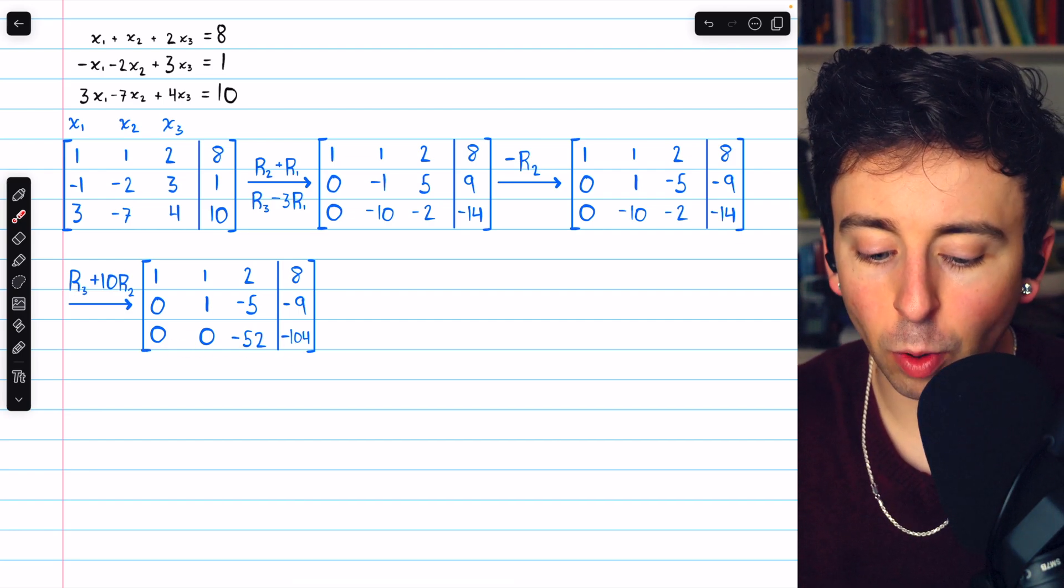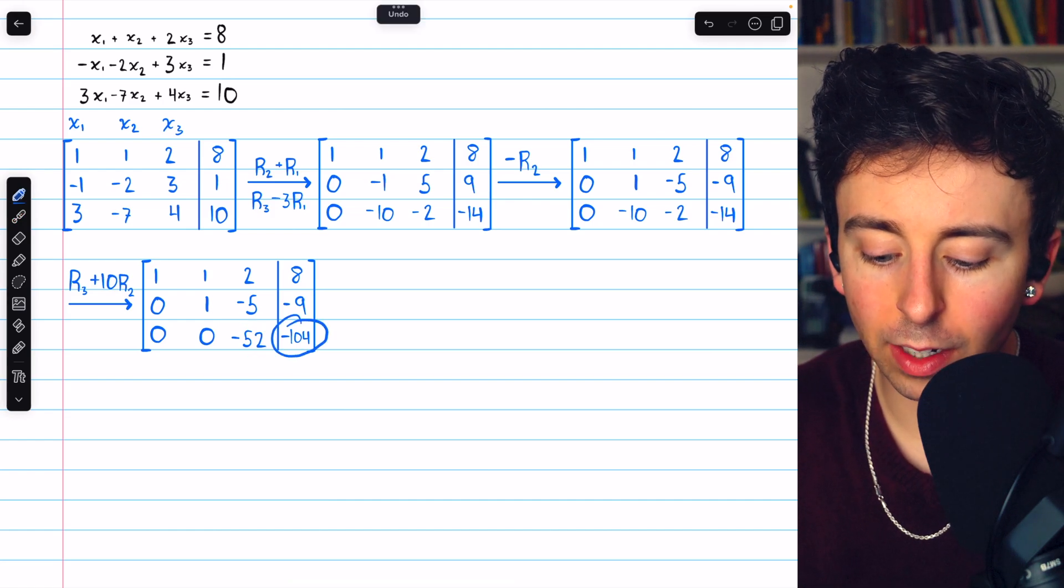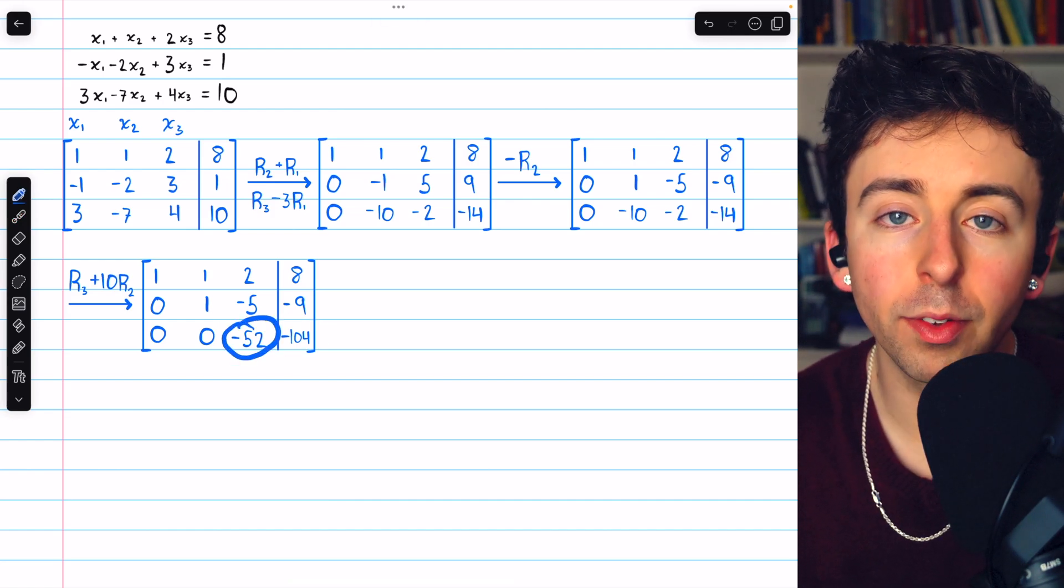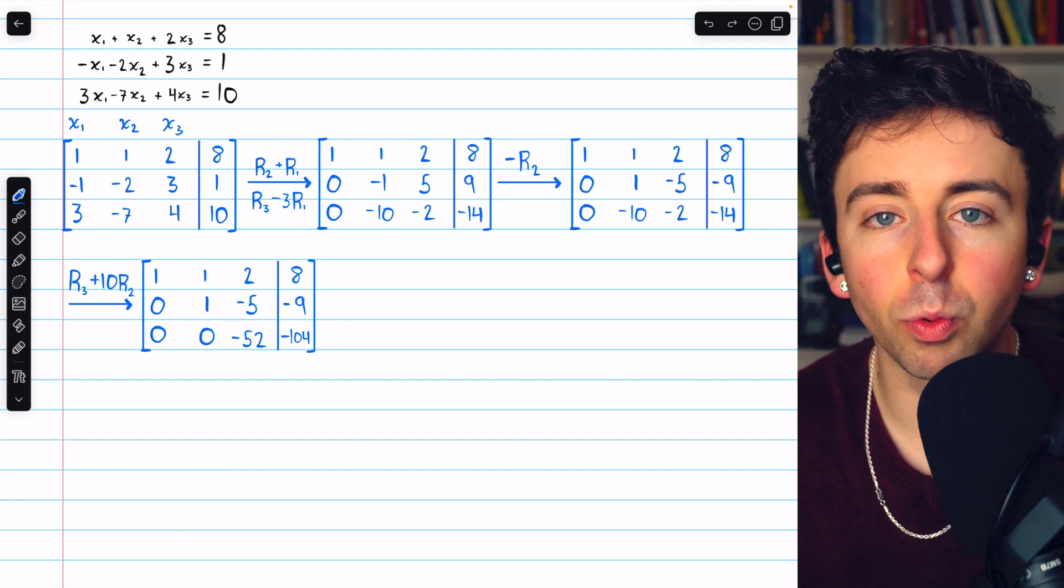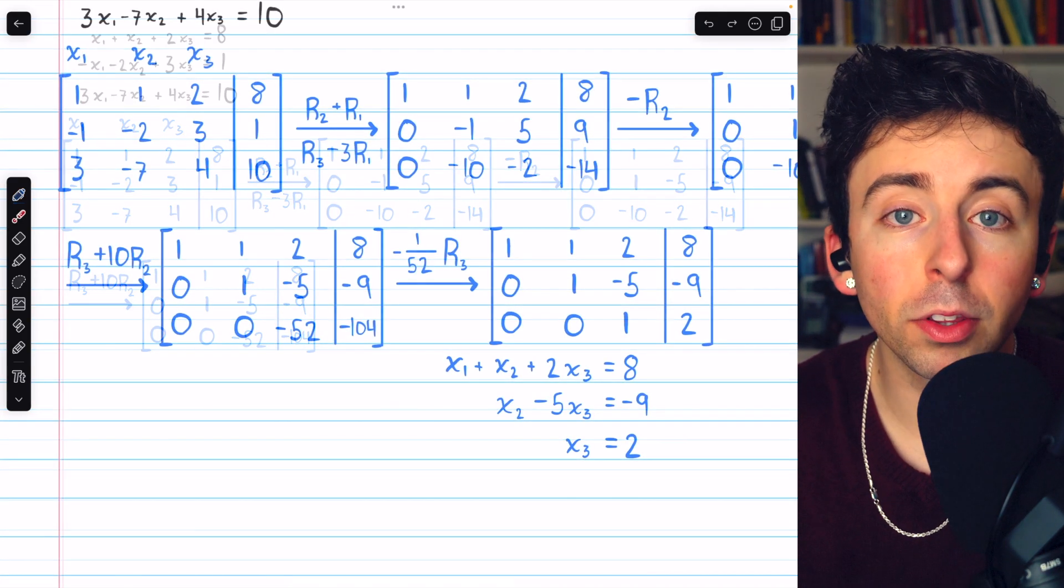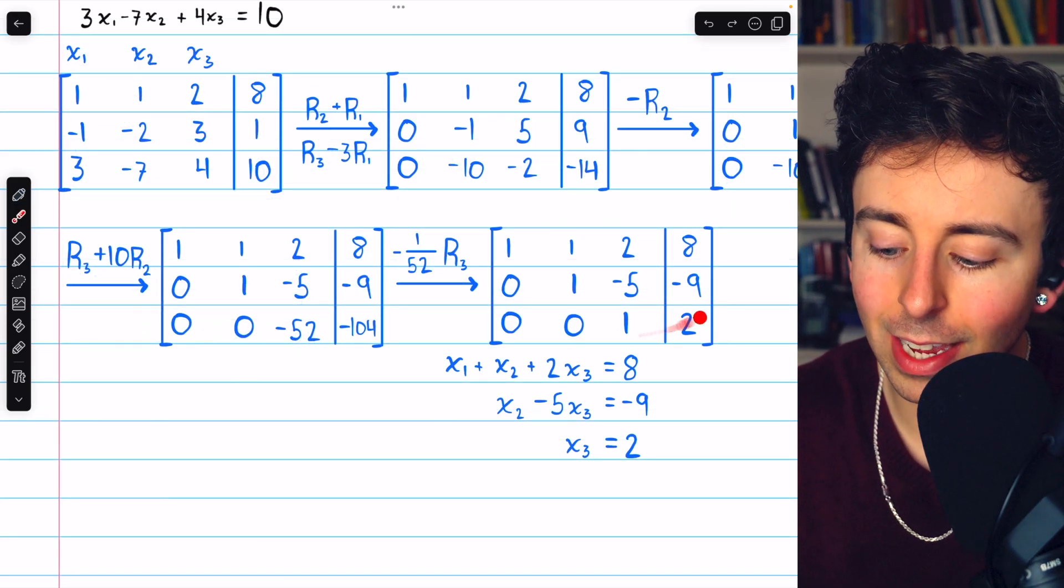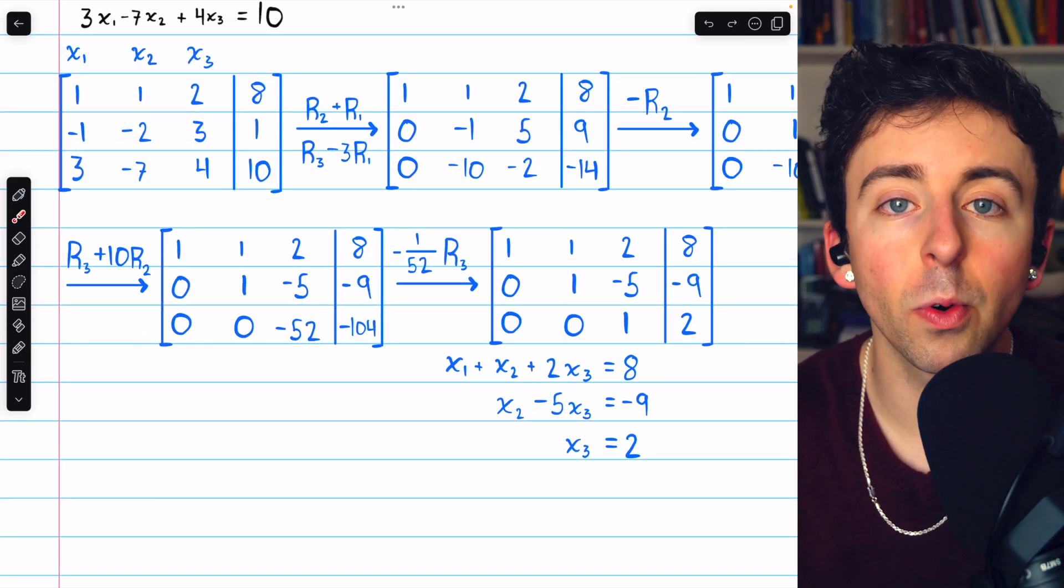Now the last row has negative fifty two and negative one hundred four. We want this leading entry to be positive one so we'll just have to multiply row three by negative one over fifty two. Multiplying row three by negative one over fifty two gets us here to this row echelon form matrix.